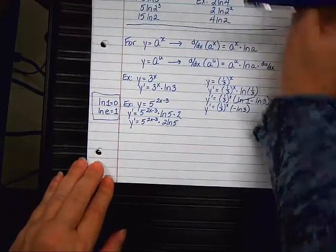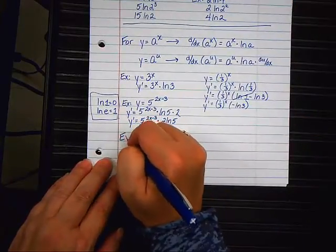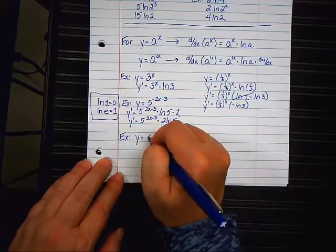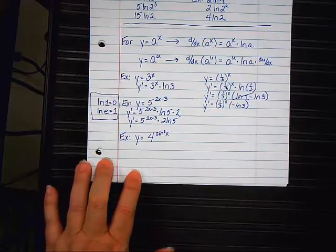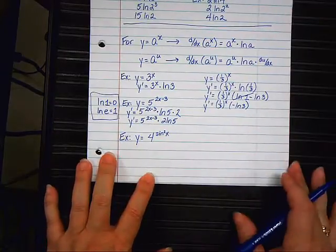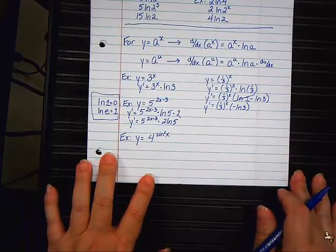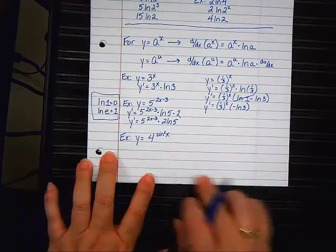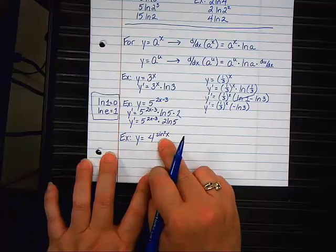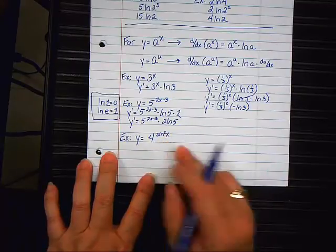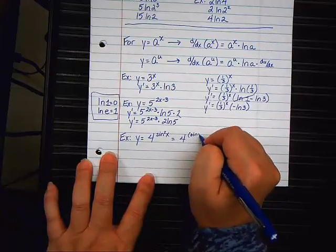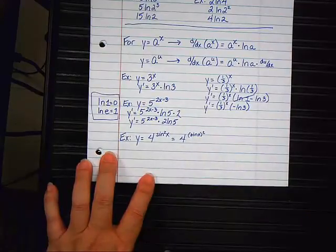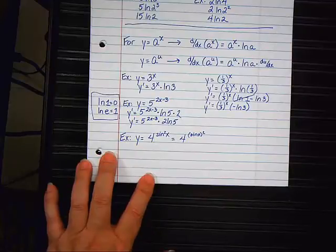Last example. Y equals four to the sine squared of x. Of course, I have to throw you a curveball. Now, I am eventually going to have to take the derivative of that exponent, aren't I? Yeah. Before I start, I'm going to rewrite the problem as sine of x, the quantity squared, like so. Because that's going to help when it comes time to take its derivative.